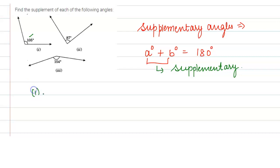So the first one is 105. So supplement of 105, supplement of 105 degree that will be 180 degree minus 105 degrees. So that will be 75 degrees.